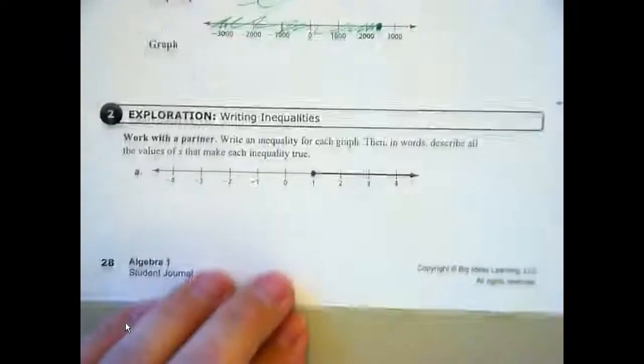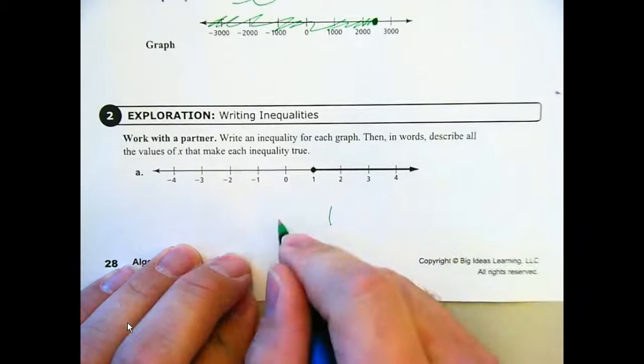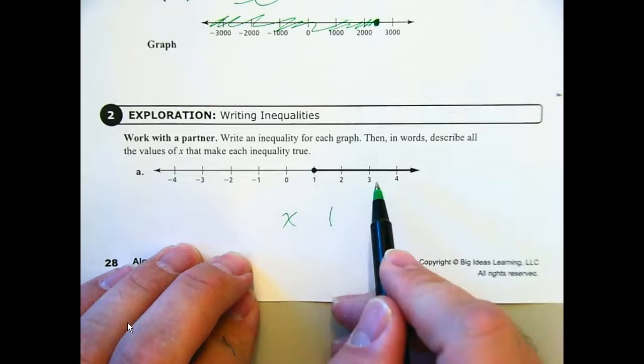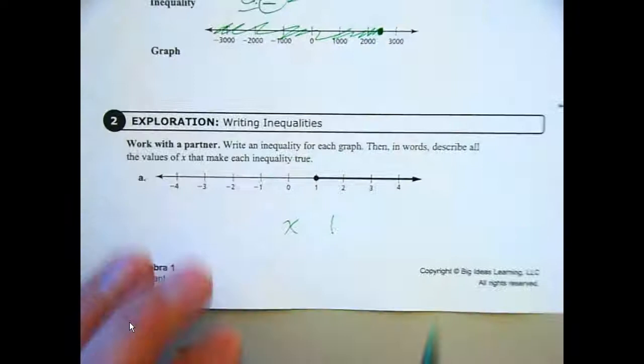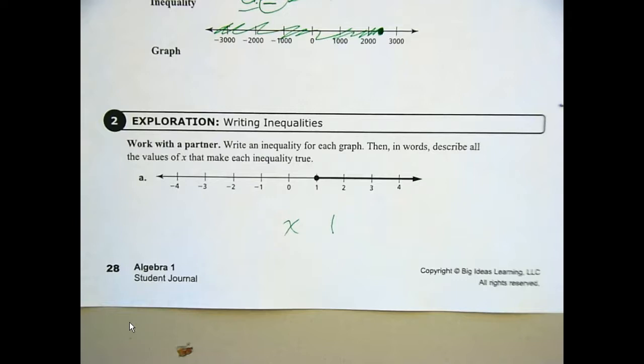First one. Write an inequality for the graph. Then in words, describe all the values x that make the inequality true. So, what's the inequality? Well, it's at 1 and x. What values are we dealing with? Logan, stand up. Billy, talk. Stand up. Stand up. No, just Logan. All right. Now, what's on your share?